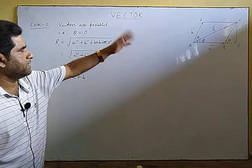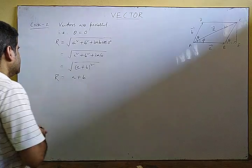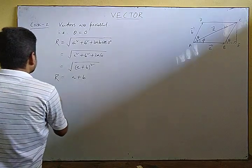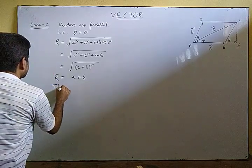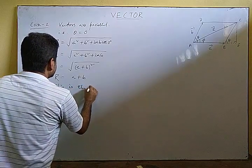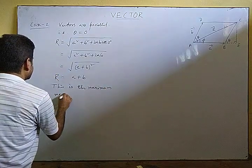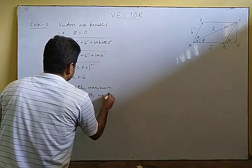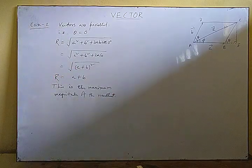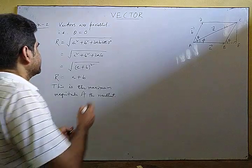When θ = 0° (vectors in the same direction), R = A + B. This is the maximum magnitude of the resultant. So R = A + B is the maximum possible magnitude of the resultant of vectors A and B.